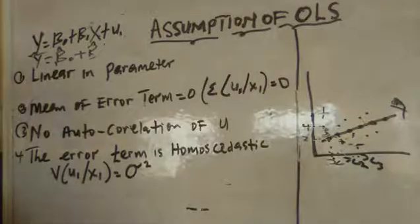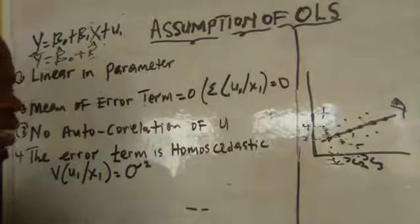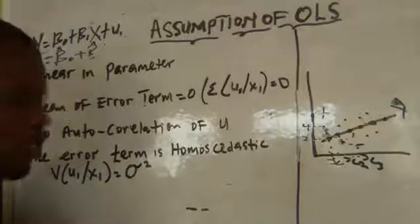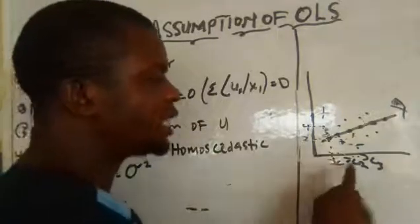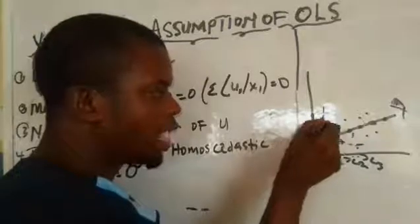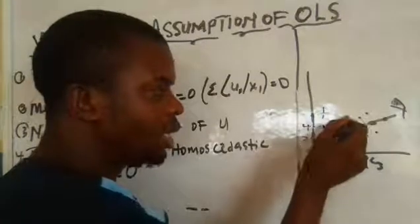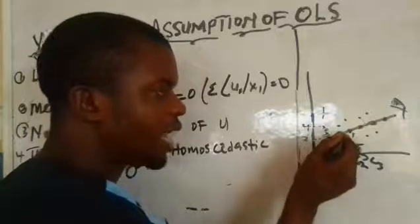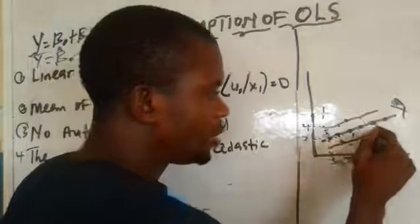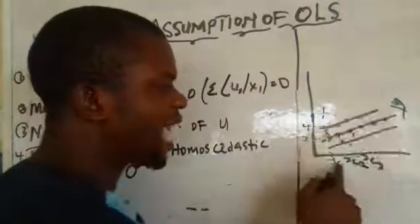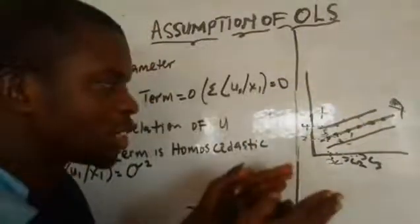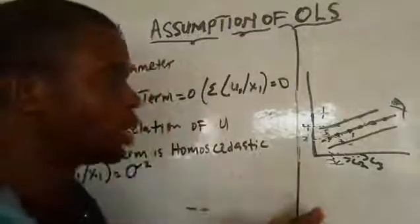The last assumption is that the error term is homoscedastic. When you say homoscedastic, it means that the spread or variation is constant — the variance is constant, the deviation is constant. Even as x increases, the variance or spread, which is the distance from each point to its corresponding point on the fitted line, does not grow larger. It maintains its position — the variance is constant, equally spread. That is homoscedastic.